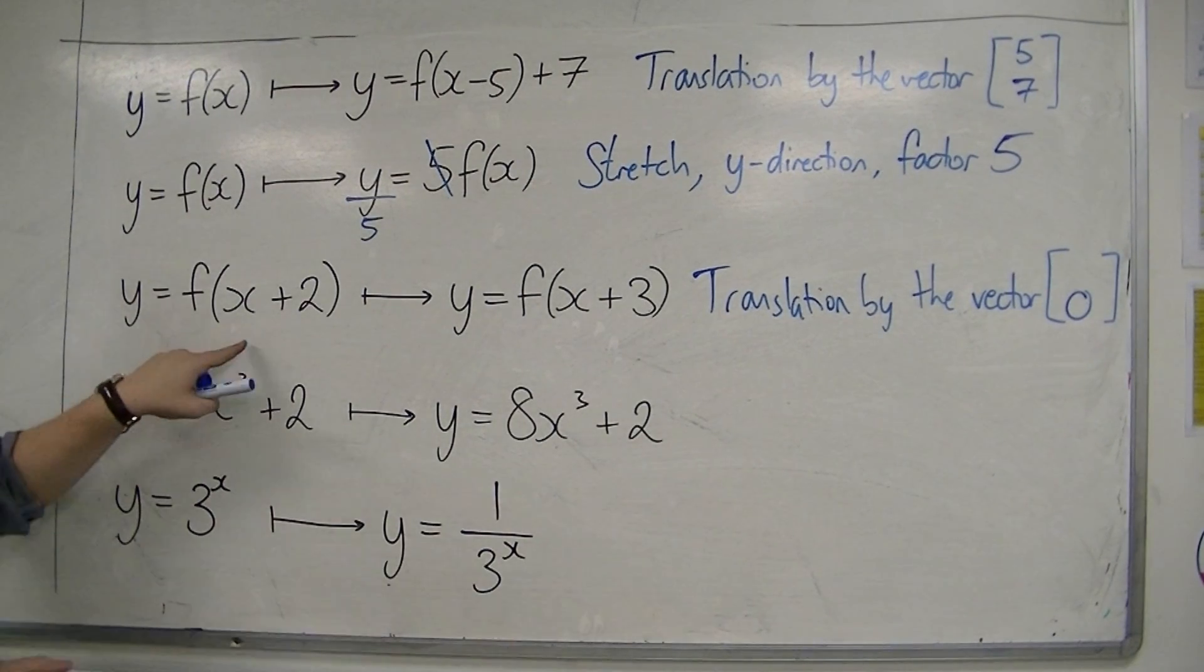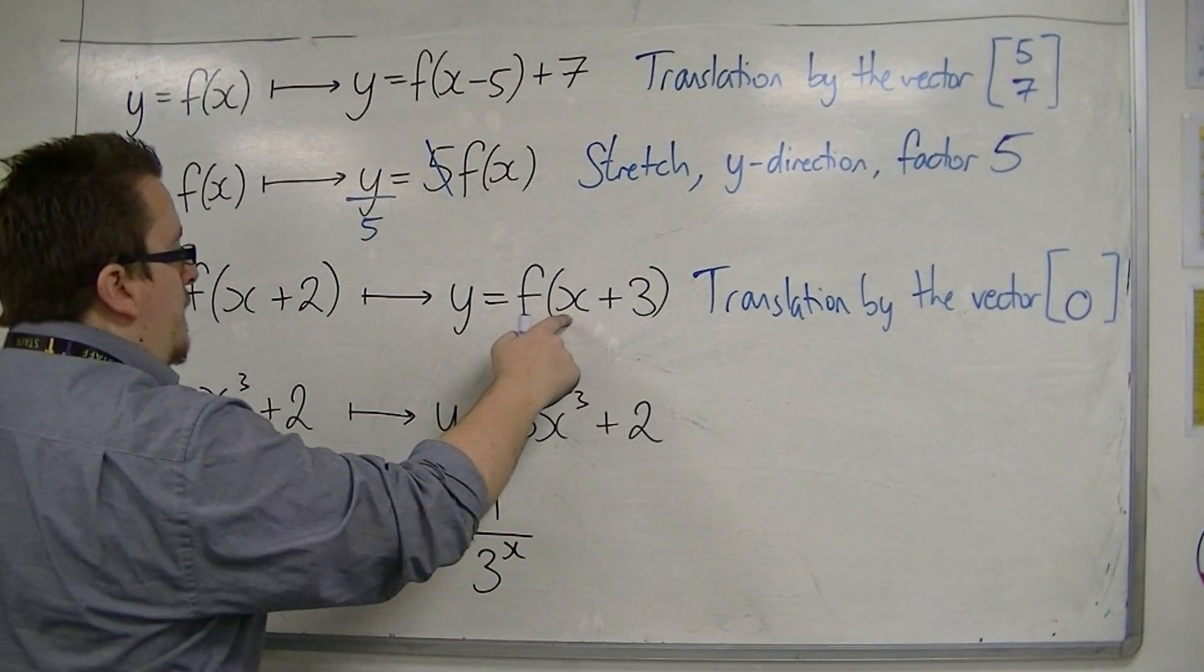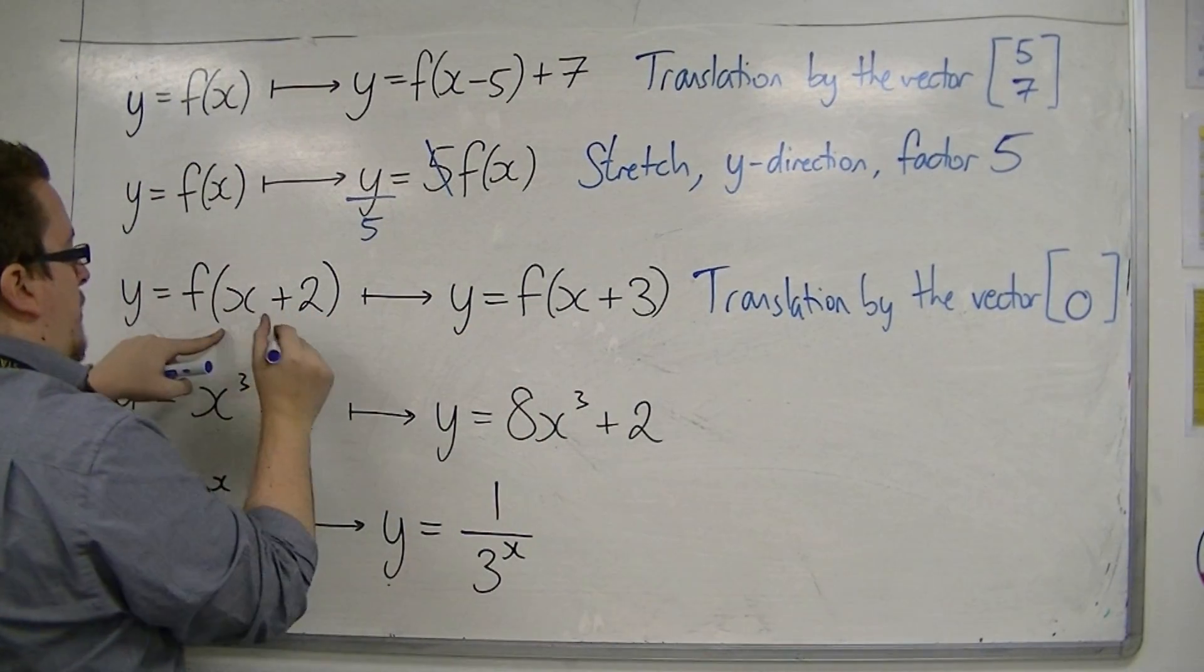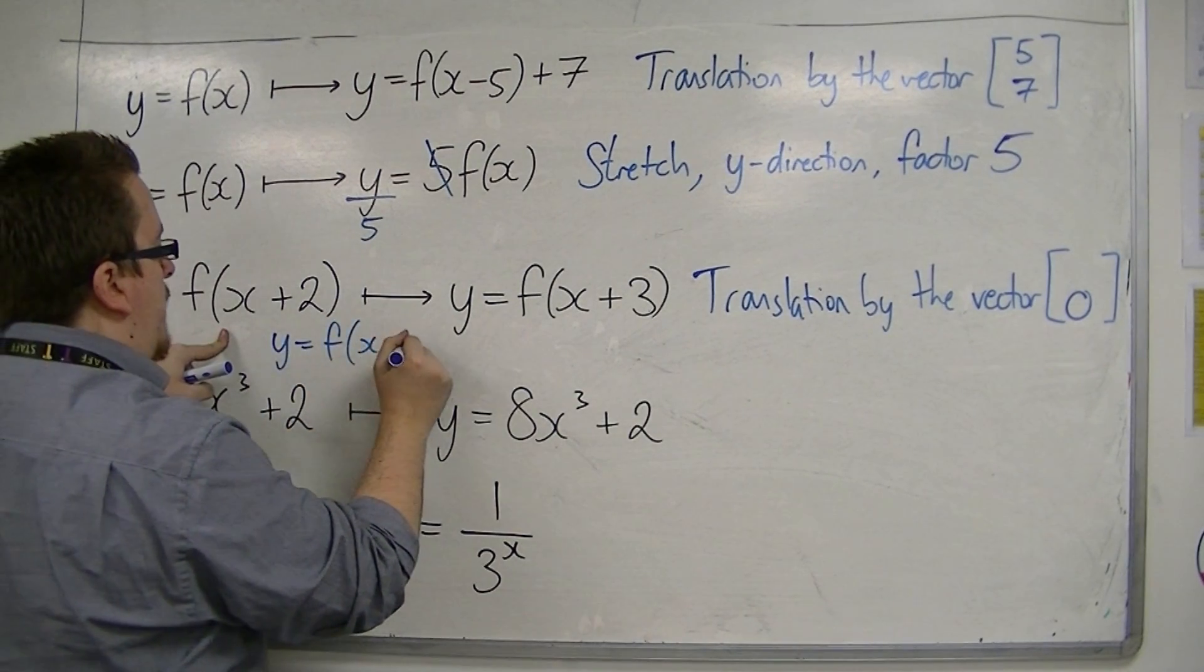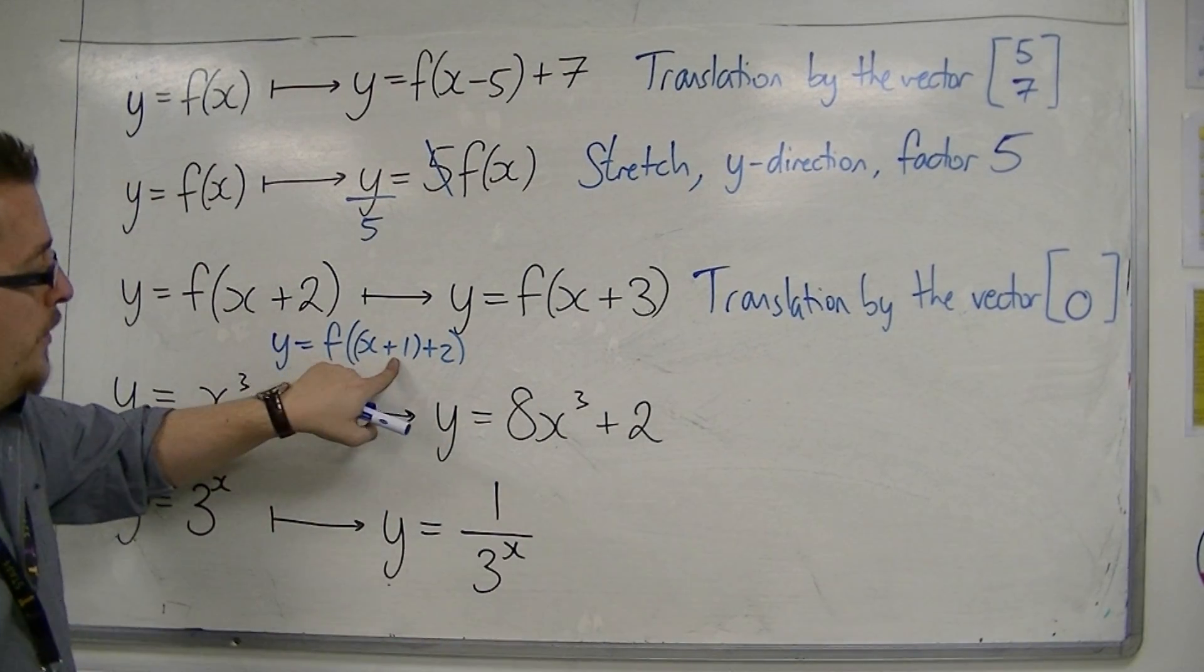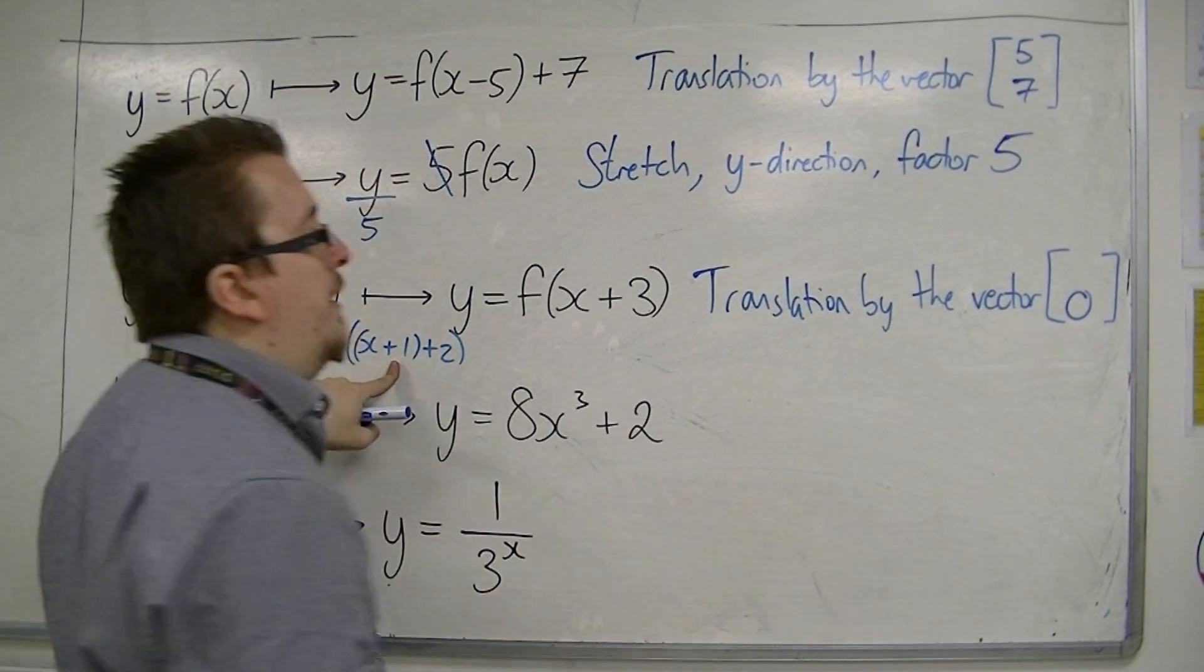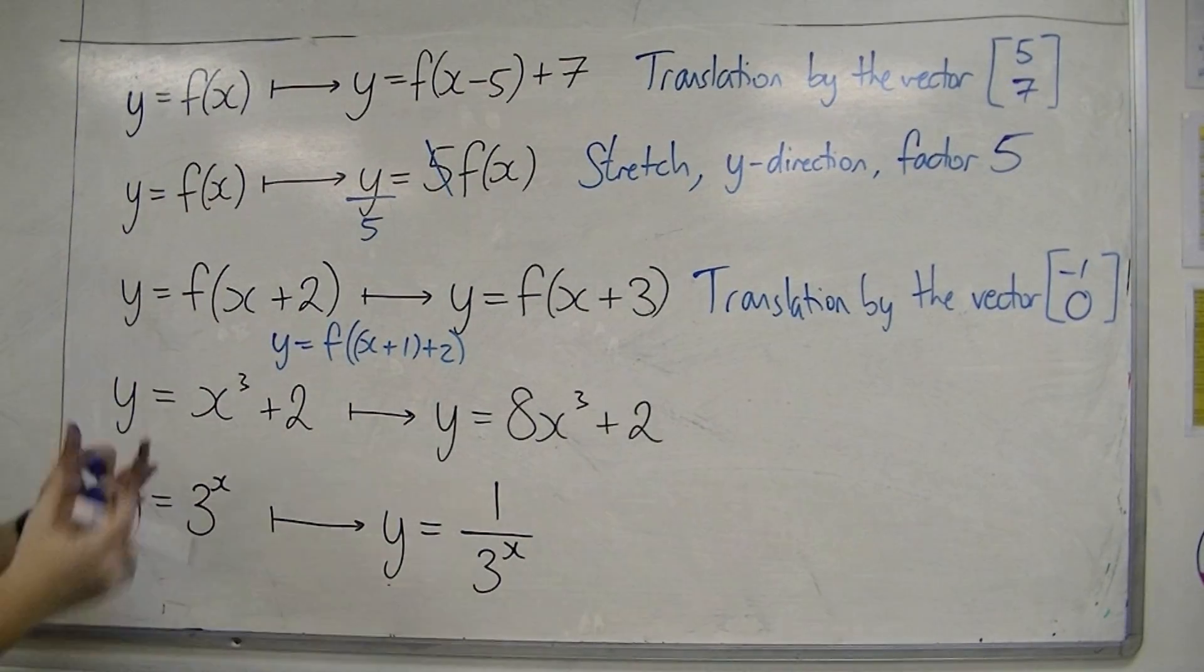What have I replaced x with? I've replaced the x with x plus 1. Because now, if I replace x plus 1 in this equation, then I have y equals f of x plus 1 plus 2. So I've replaced the x with x plus 1. And because I'm looking at the number inside the bracket, it changes signs, from 1 to minus 1. So the whole thing is a translation by the vector minus 1, 0.